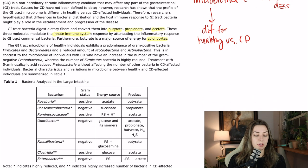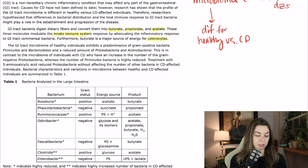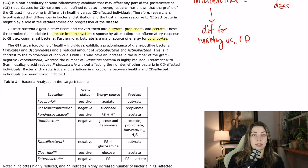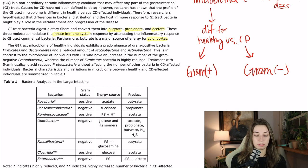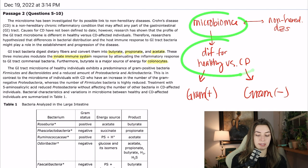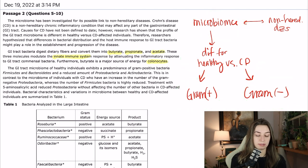The GI tract microbiome of healthy individuals exhibits a predominance of gram-positive bacteria, firmicutes and bacteroidetes, and a reduced amount of proteobacteria and actinobacteria. This is in contrast to the microbiome of individuals with CD — we have an increase in the number of gram-negative proteobacteria, whereas the number of firmicutes bacteria is highly reduced. So I'm going to put on my flowchart: healthy = gram-positive, and CD = more gram-negative. These ideas kind of lead into each other, so I can use arrows to say what I want to say.